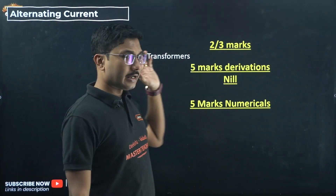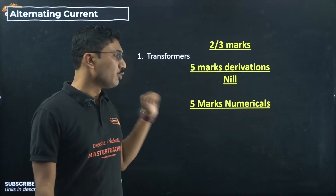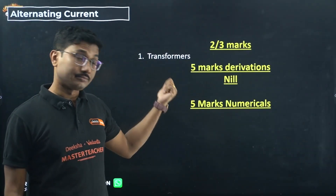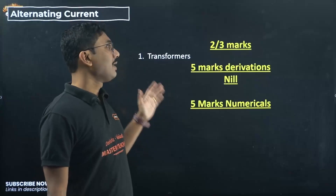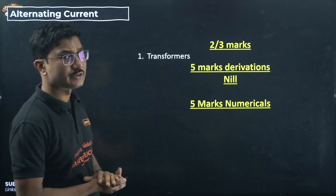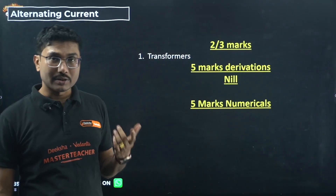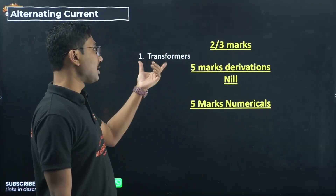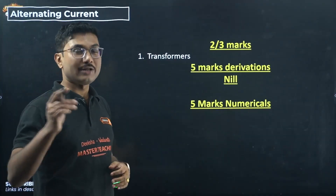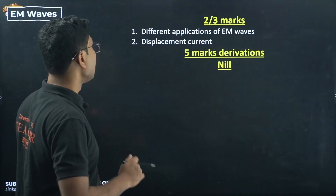Alternating Current: according to the board blueprint, there are no 2-3 marker questions — only one 5-mark numerical question and some objective questions (MCQs and fill-in-the-blanks). In your pre-board you might find a question on transformers, so prepare that topic since it may also appear as an MCQ. For the 5-mark numerical question, check the long-form video where all important numericals from this chapter are discussed.